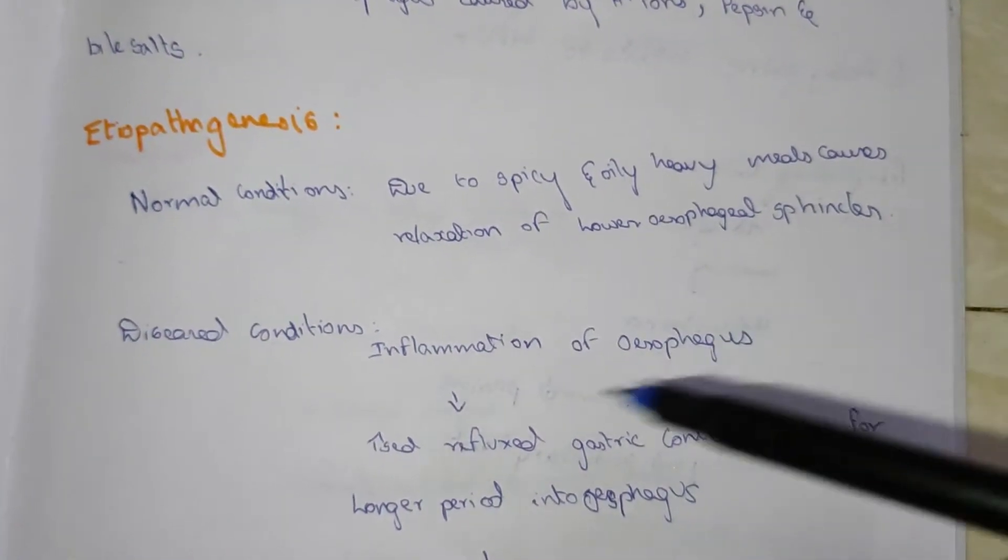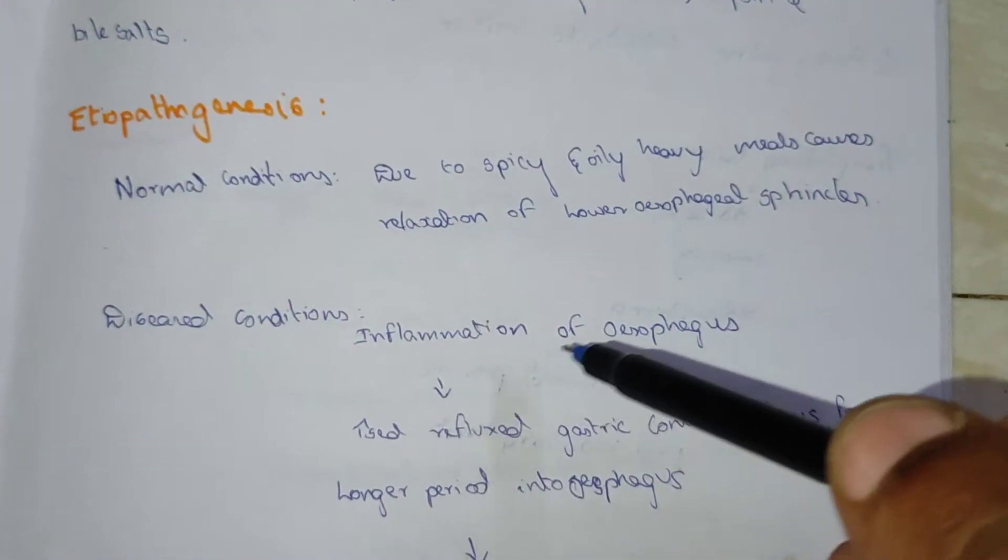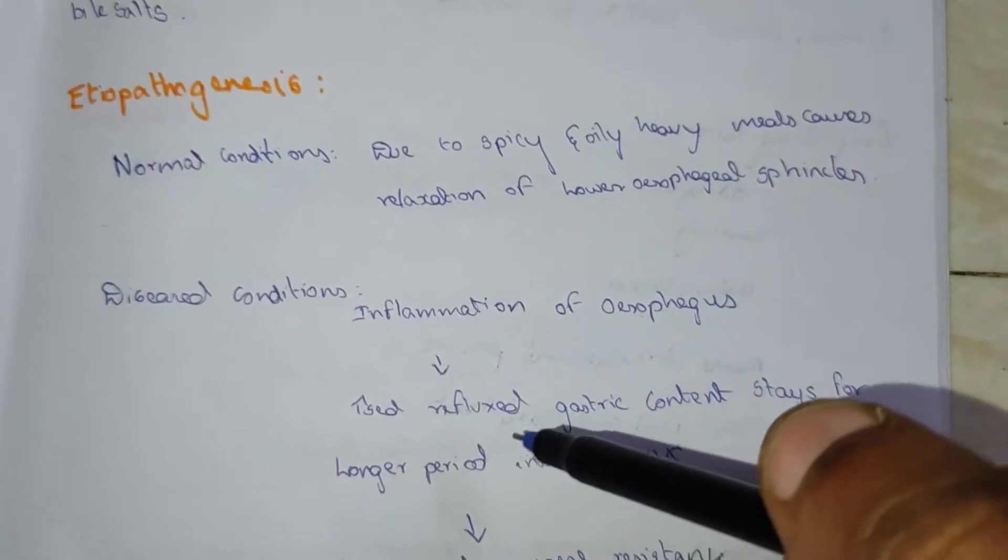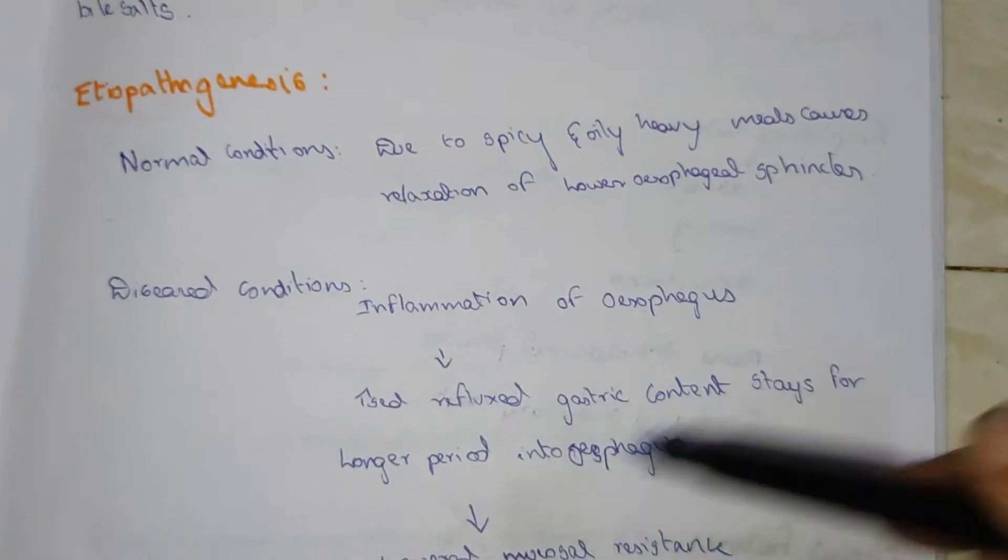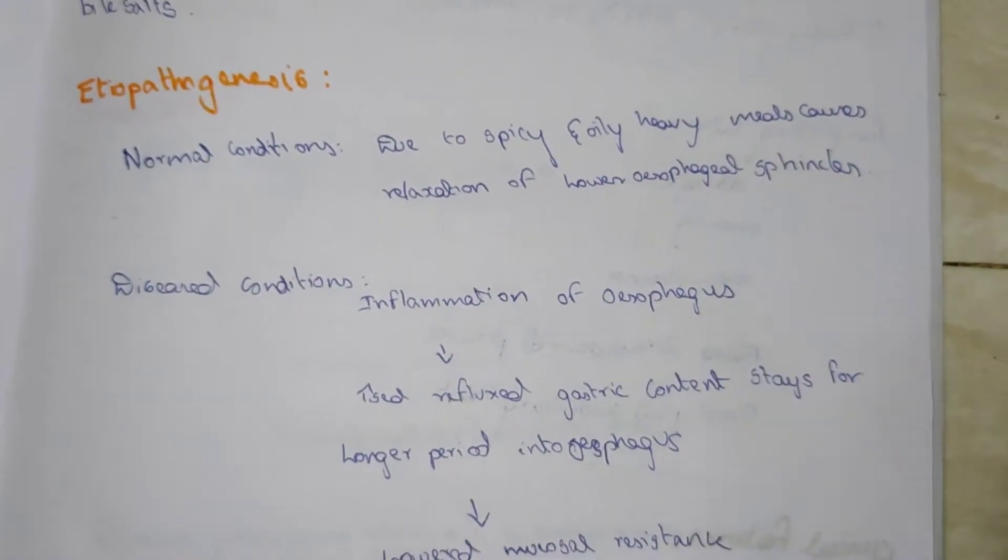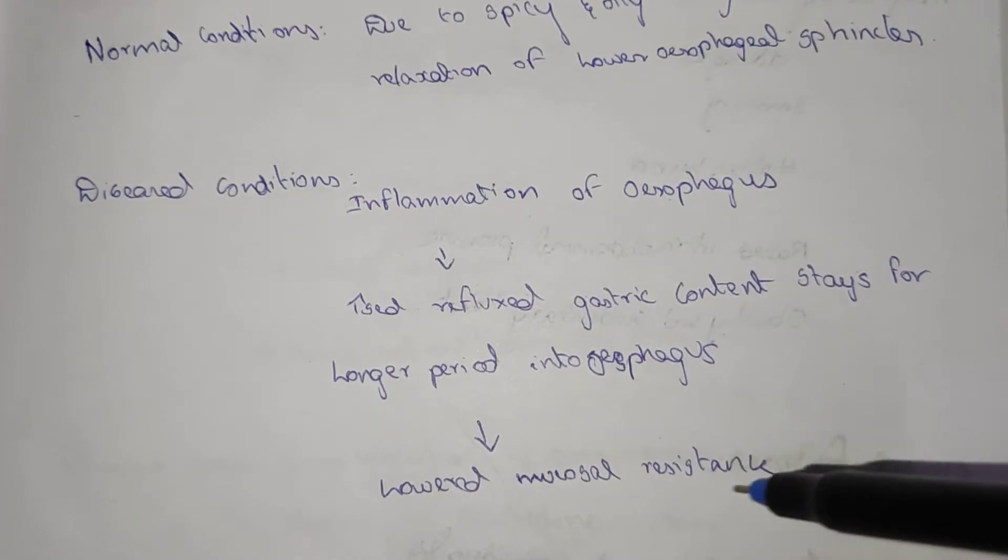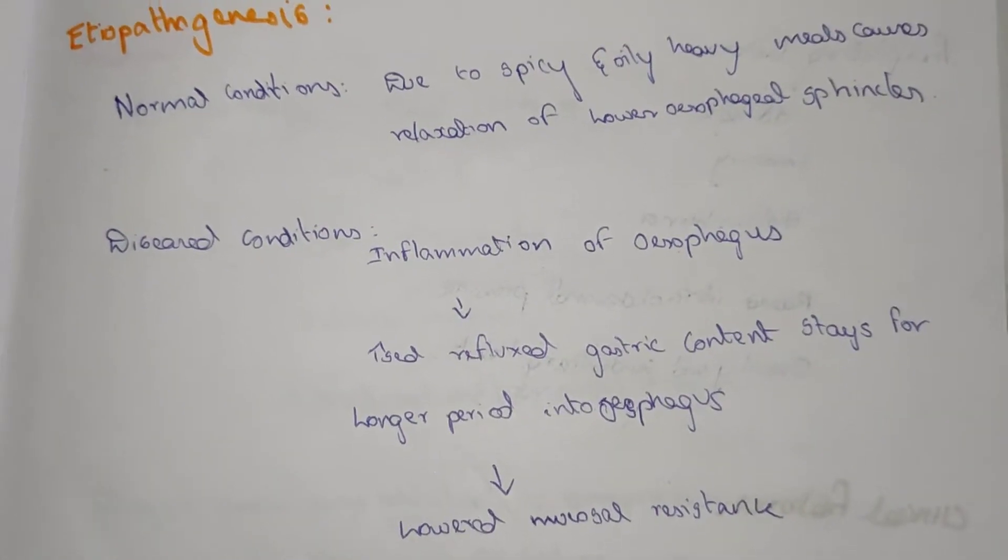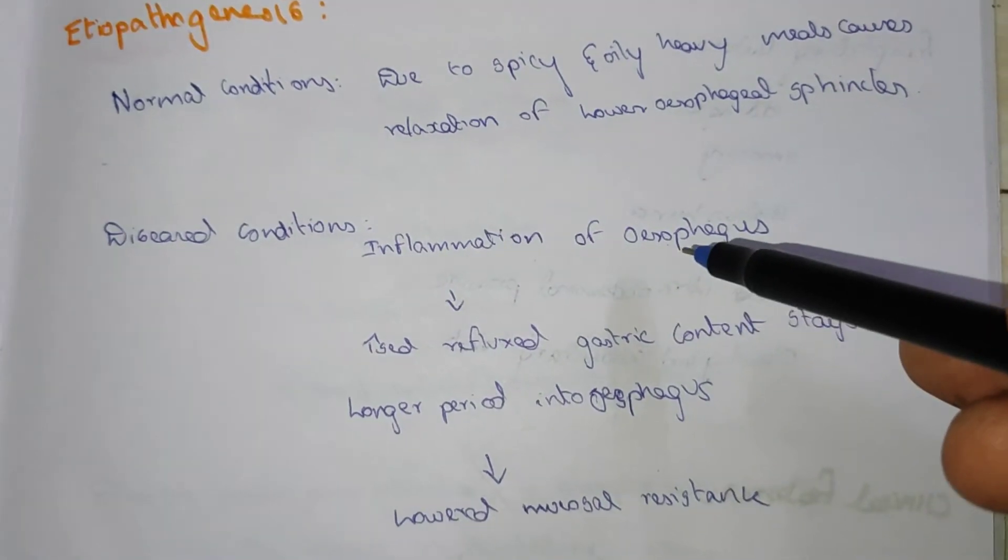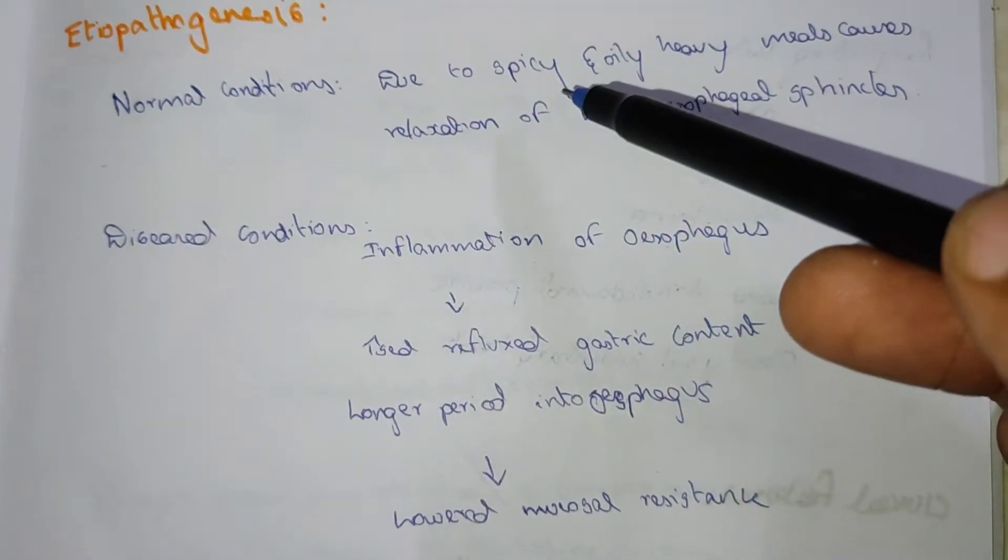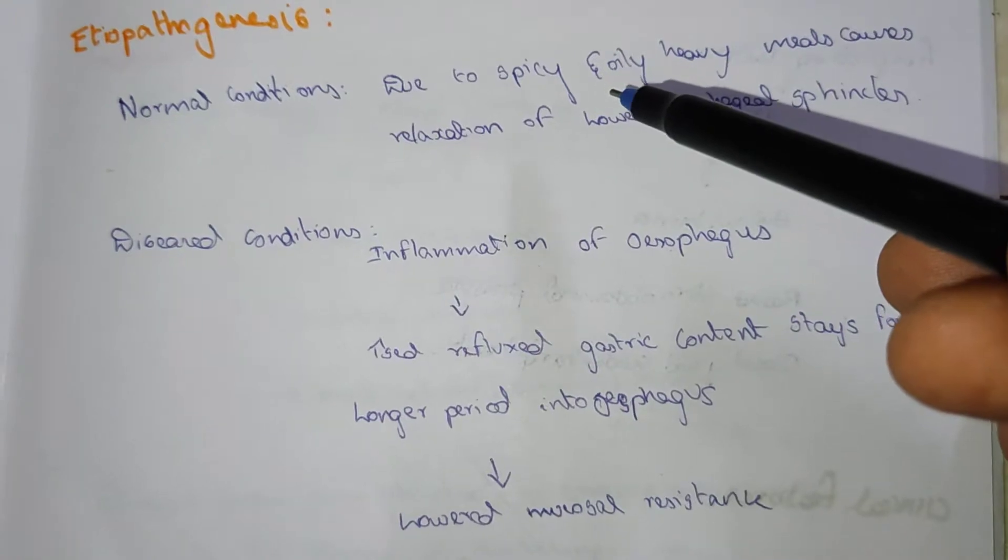In diseased condition, that is inflammation of the esophagus, this increases the reflux of gastric content that stays longer for a longer period in the esophagus, so that there is lower mucosal resistance. It is due to the eating of spicy and oily food. Now we will see the mechanism.